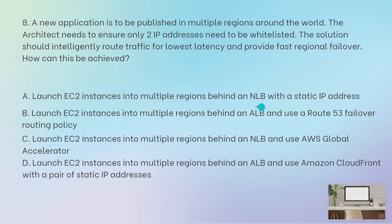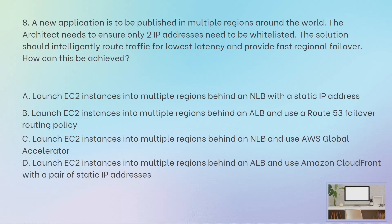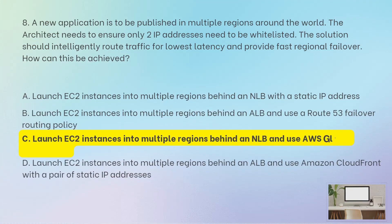Why not the other options? NLB with a static IP address alone does not allow whitelisting just two IP addresses. Failover routing policy is not used here because you do not want a simple primary/secondary failover — that configuration only routes to secondary when primary fails. Intelligent traffic routing is not possible with Route 53 or CloudFront; it is possible with Global Accelerator. Through an ALB you cannot whitelist IP addresses. Therefore B and D are not correct, and the correct answer is EC2 with NLB and Global Accelerator.